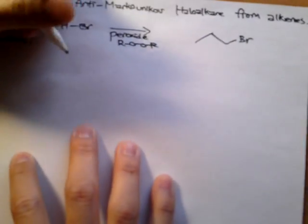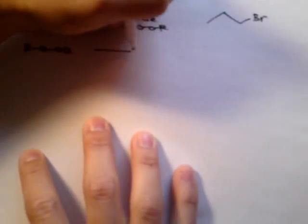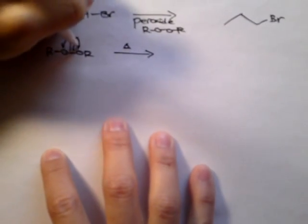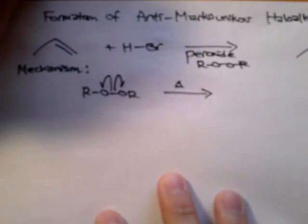The first step of this mechanism is the dissociation of peroxide into radicals. So we have ROOR, and we use heat. The bond would break. It's a homolytic cleavage, and we'll end up with a radical.